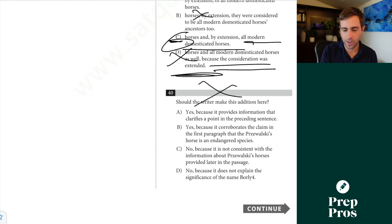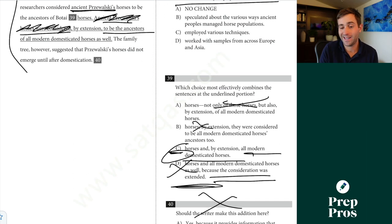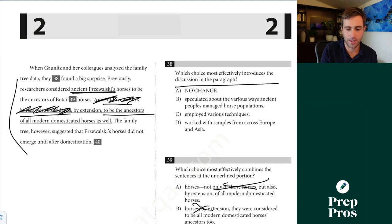So get rid of that one. It has a semicolon. Now we can look at the other ones. So we'll look at A. Botai horses, not only of those horses, but also by extension, really, really wordy. We're also starting to change the meaning of the sentence with the not only but also. C looks like it should be correct. Botai horses, and by extension, all modern domesticated. Same exact idea. We're keeping all of really basically the same structure. We've just condensed this down to be the ancestor. This is just way wordier than what we're saying there in C. D horses and all modern domesticated horses as well. Because the consideration was extended, really unnecessarily wordy. C is going to be our correct answer there.